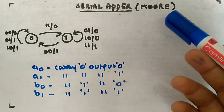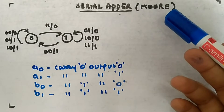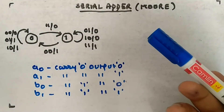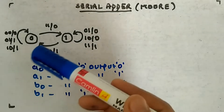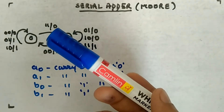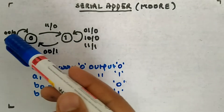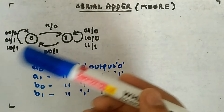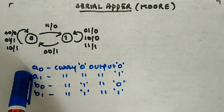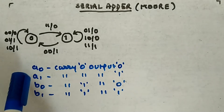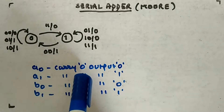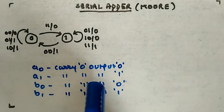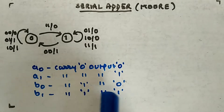Now let's design the same circuit using a Moore machine. In the Moore machine, we convert the Mealy machine into a Moore-type state diagram. We had carry zero and carry one, but this time the output will not be dependent on the input — only the present state. Since having zero with output zero and zero with output one creates confusion, I've taken variables A and B. A represents carry zero, B represents carry one. A0 means carry zero with output zero, A1 means carry zero with output one, B0 means carry one with output zero, and B1 means carry one with output one.